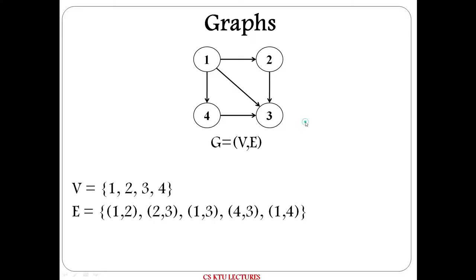This is an example of a graph. You would have four vertices: 1, 2, 3, and 4. So V = {1, 2, 3, 4}. Then edges: 1 to 2 is one edge, 2 to 3 is another edge, and so on. You would have a total of 5 edges. So the edge set contains 5 edges.